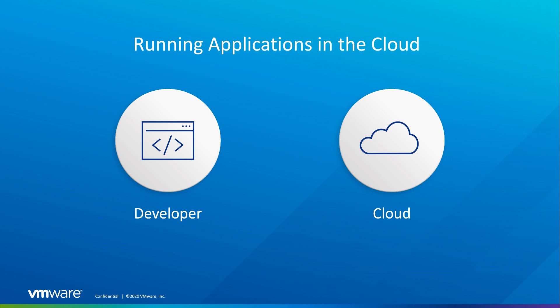Tanzu Build Service was created to make the process of building and deploying an artifact from source code easier for application developers and more secure for platform operators. It does this using a secure application dependency supply chain to build the app, and then continuously monitors those dependencies, as well as base OS-level patching for day two operations.